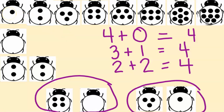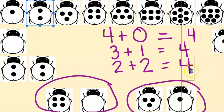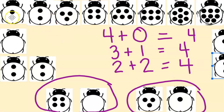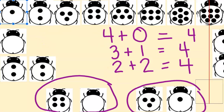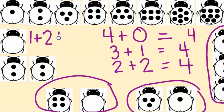Could we also have one and two and one — does that make four? What do you think? Let's add them up: two, three, four. Yes, that makes four! So let's write that equation: one plus two plus one equals four. Very good!